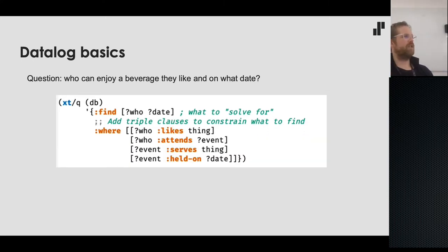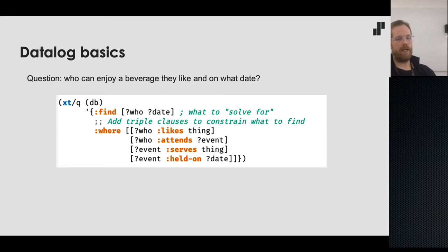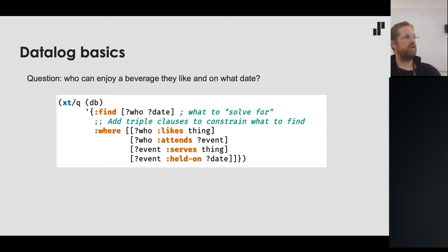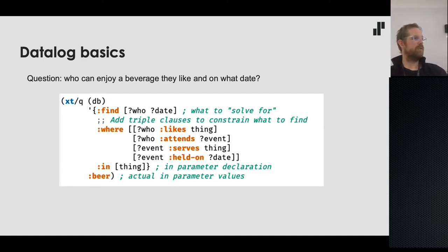Next we add the triple clauses that constrain what to find. Each where clause is a binding for an EAV triple: the first position in the vector is E, the second is A, and the last is V. We have logic variables — names beginning with a question mark by convention — that we want to bind. Different appearances of `?who` refer to the same thing throughout the query.